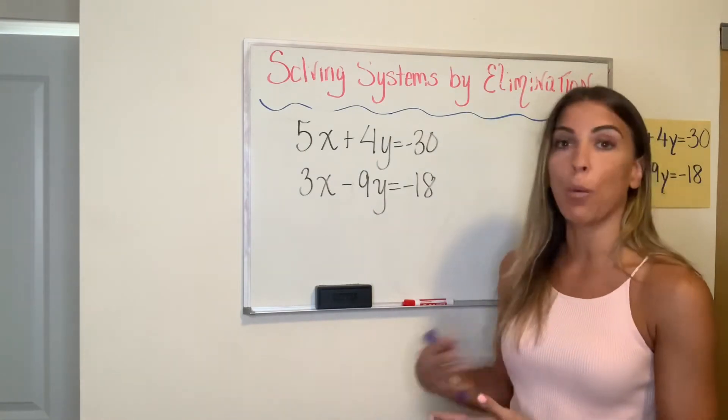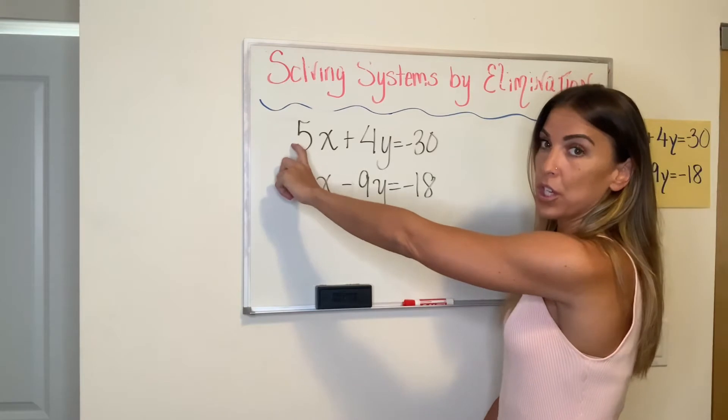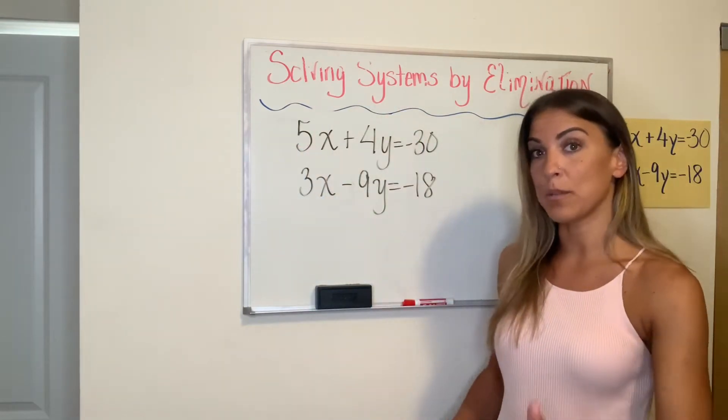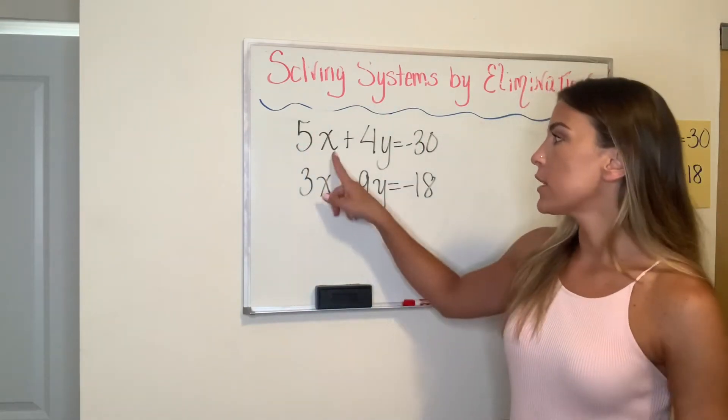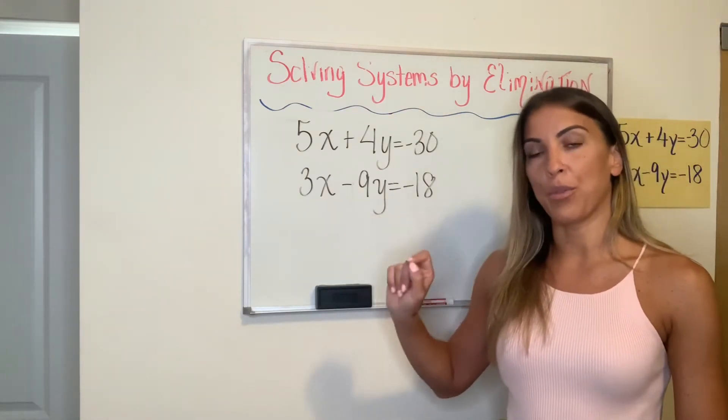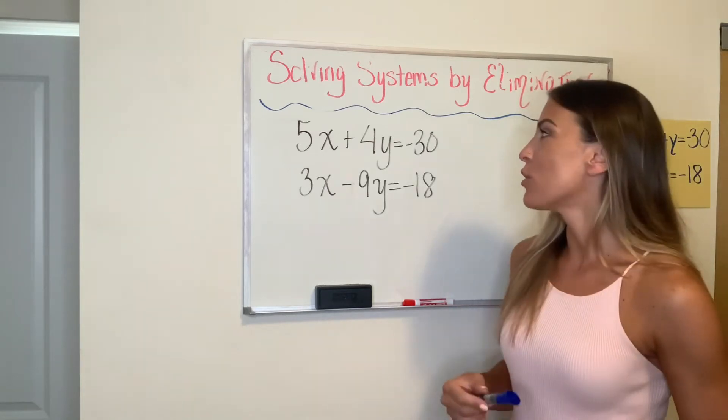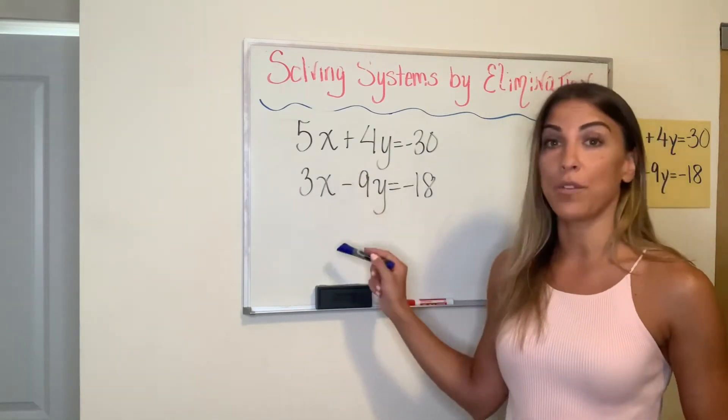It doesn't matter which one. I'm going to go with x. So we want x to have opposite coefficients or the same coefficient and then you subtract. Doesn't matter. So one is a five and one is a three. What is the least common multiple of five and three? When I ask you questions, please pause the video and try so that you're giving yourself some thinking time. So the least common multiple of five and three is 15.